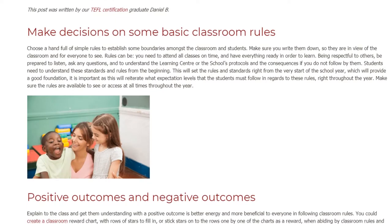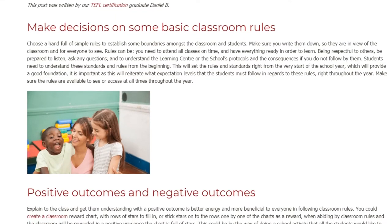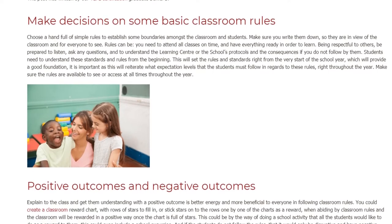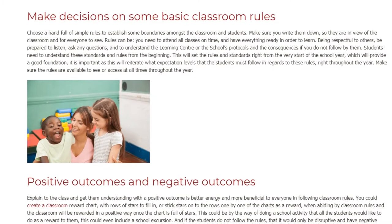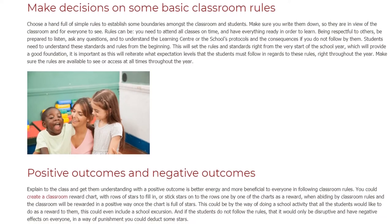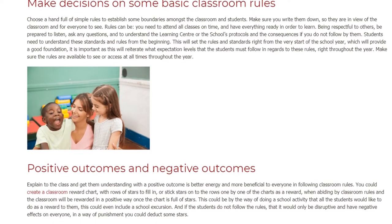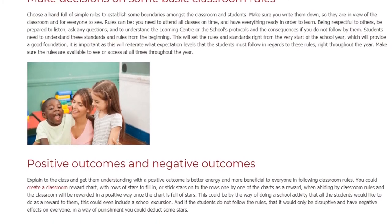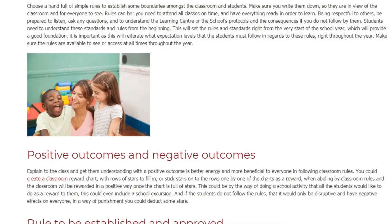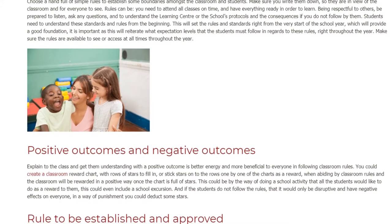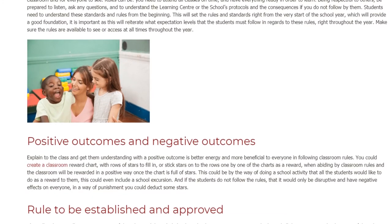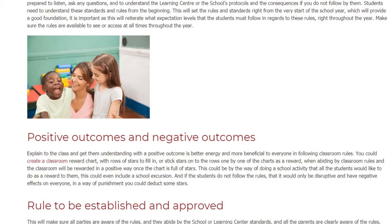Positive Outcomes and Negative Outcomes: Explain to the class that a positive outcome brings better energy and is more beneficial to everyone in following classroom rules. You could create a classroom reward chart with rows of stars to fill in, sticking stars onto the rows one by one as a reward when abiding by classroom rules. The classroom will be rewarded positively once the chart is full of stars.